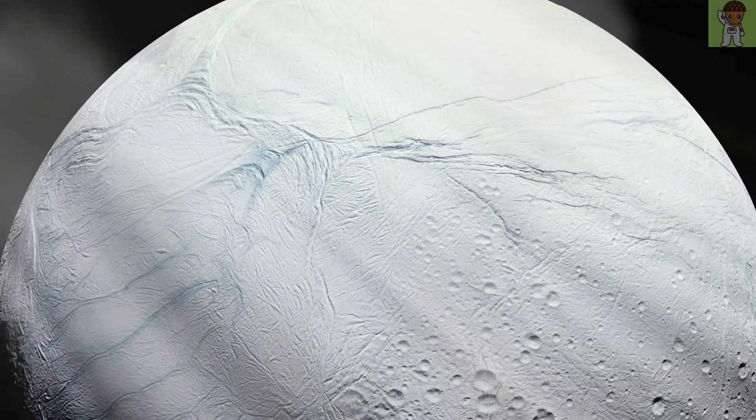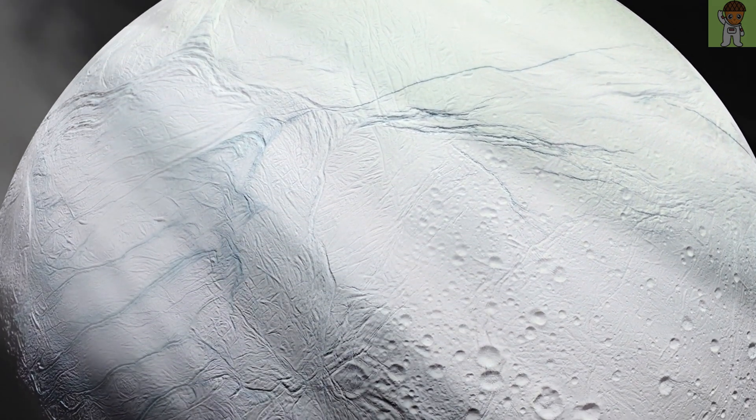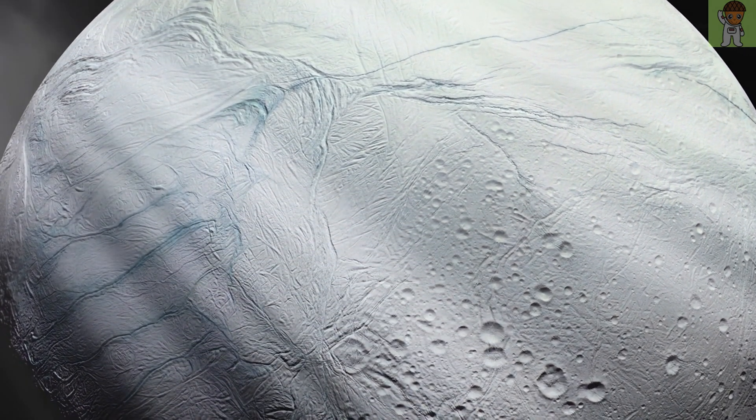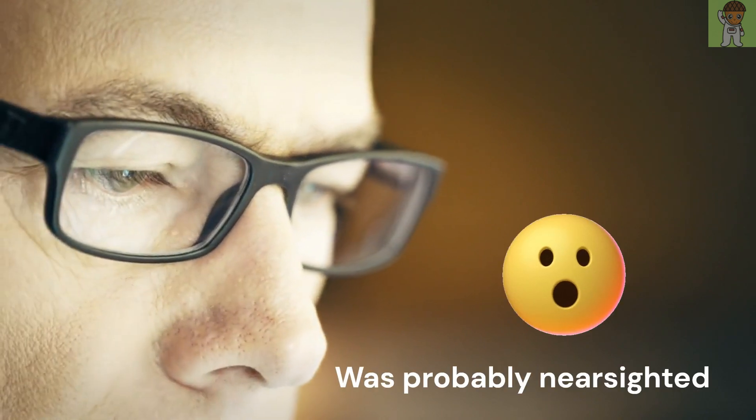This year, scientists also spotted a key organic compound shooting out of Saturn's icy ocean moon, Enceladus. And researchers also worked out that the astronomer who discovered Saturn's largest moon, Titan, was probably nearsighted.